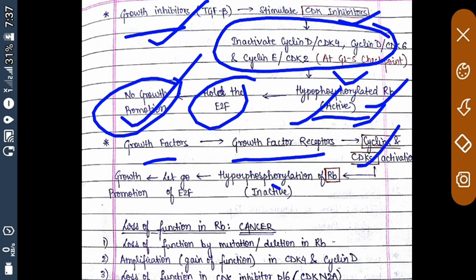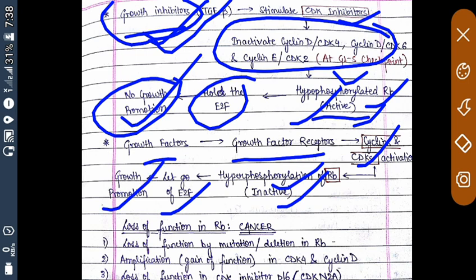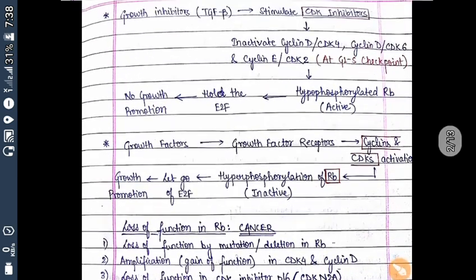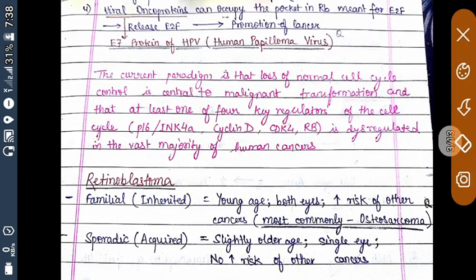When growth factors come in, they bind to growth factor receptors, activating cyclins and CDKs, leading to hyperphosphorylation of RB — that is, inactivation of RB. This releases E2F, which then promotes growth. Loss of function in RB is seen in cancer, either by mutation, deletion, amplification of CDK4 or cyclin D, or loss of function of CDK inhibitors such as CDKN2A or p16.